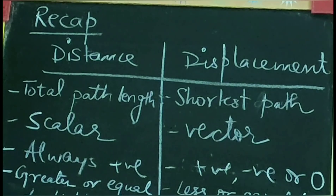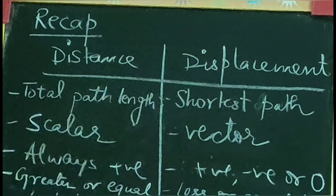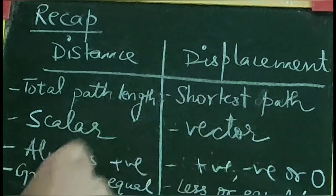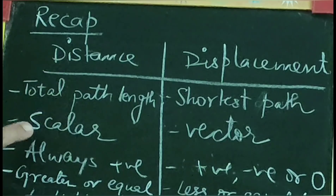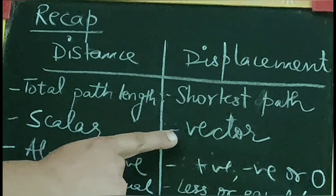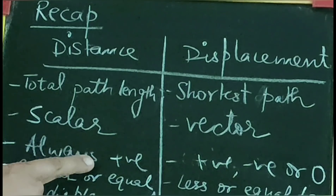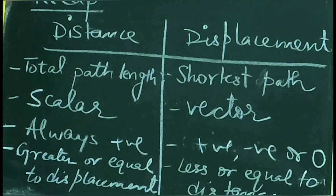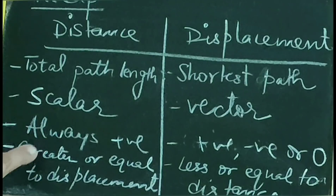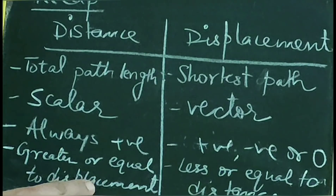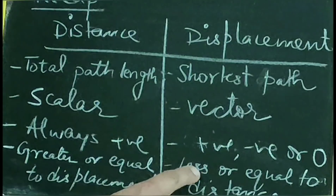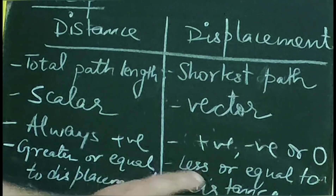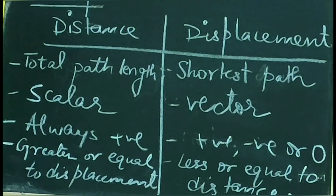To recapitulate what we did in the last session: distance and displacement. We define distance as the total path length covered by an object, and displacement as the shortest path between the initial and final position. Distance is a scalar quantity and displacement is a vector quantity. Distance is always positive and displacement can be positive, negative or zero. Distance is greater than or equal to displacement in all cases. Distance and displacement are equal when an object moves in a straight line.